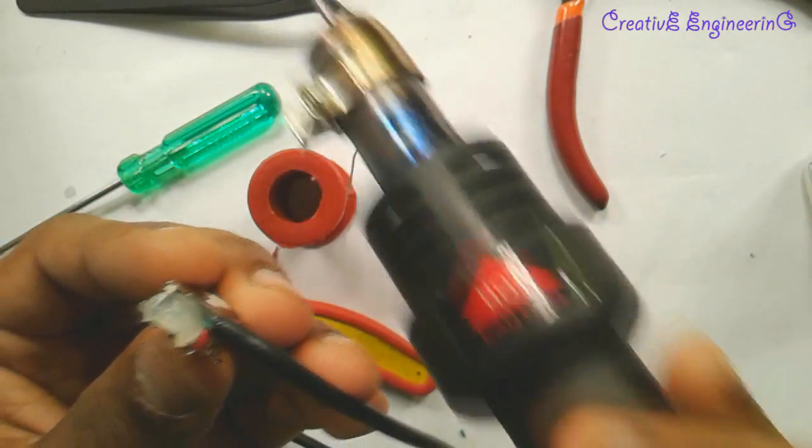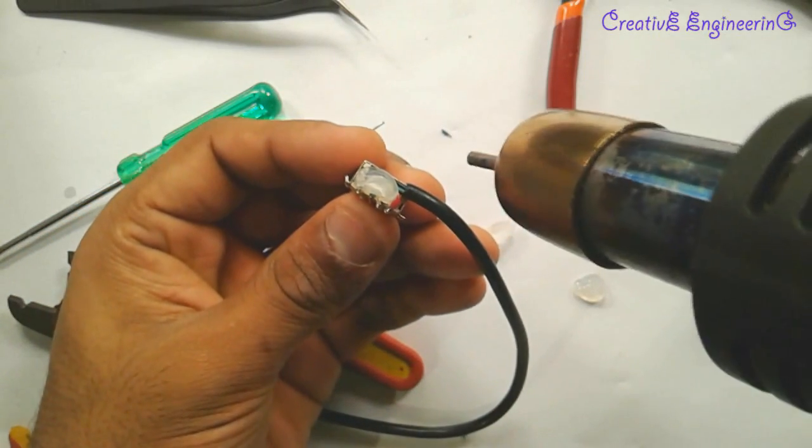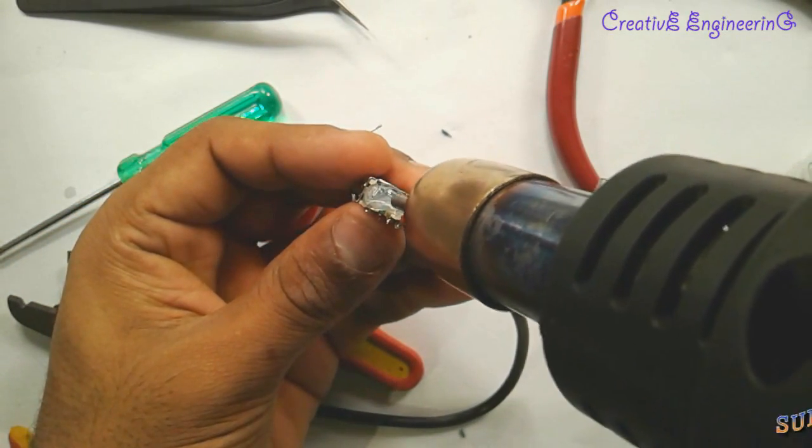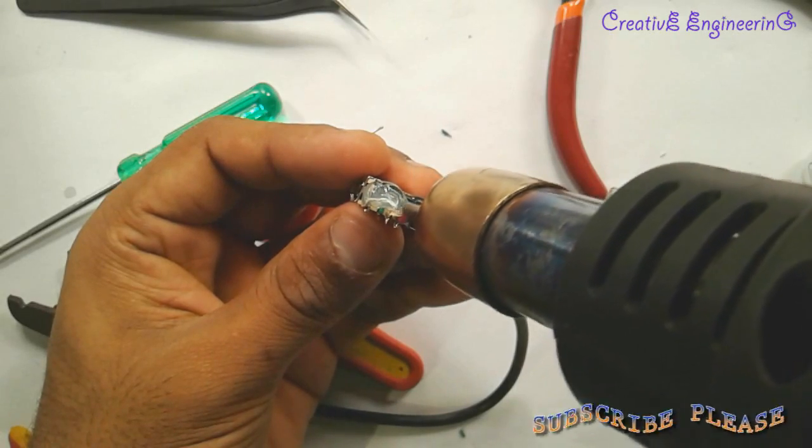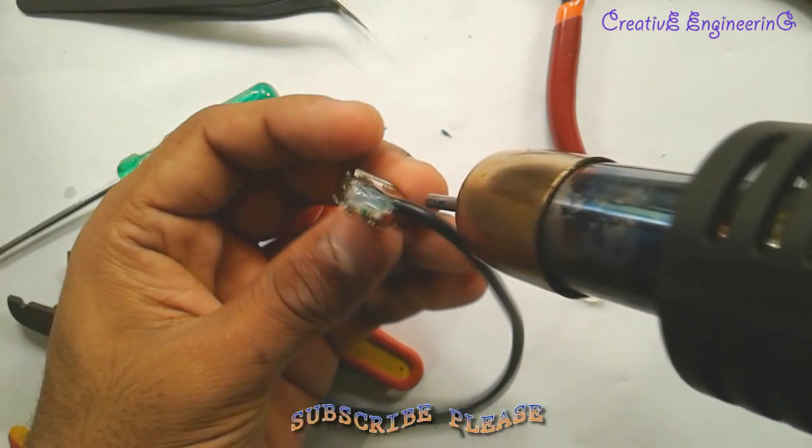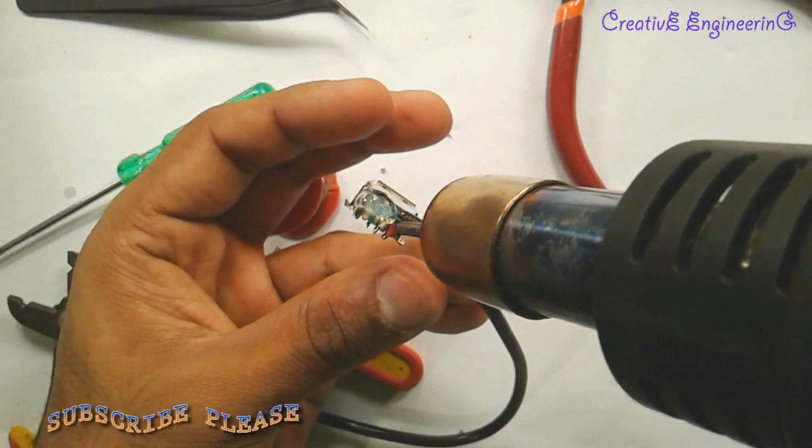After this I use a hot air gun. This will help you melt the hot glue. You use it very carefully. If you don't have a hot air gun, you can use a hot glue gun.